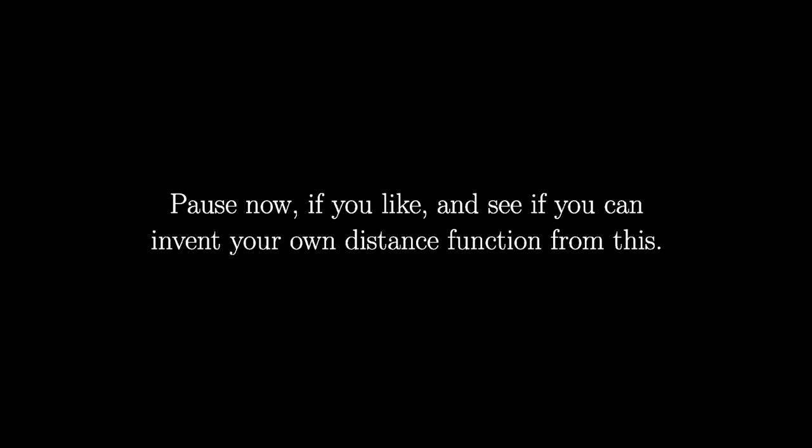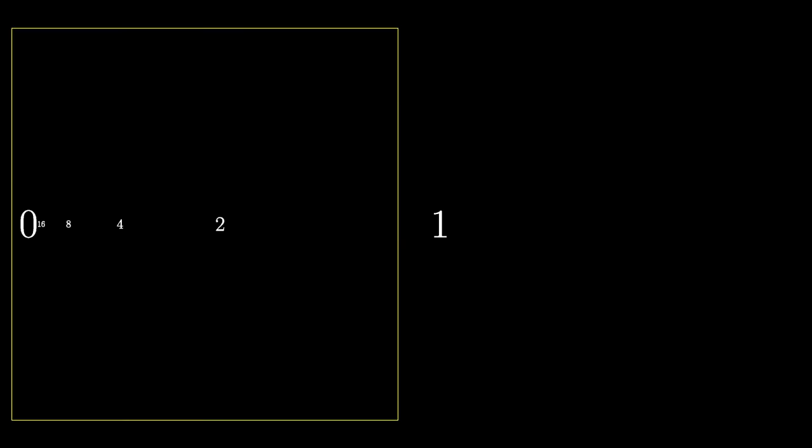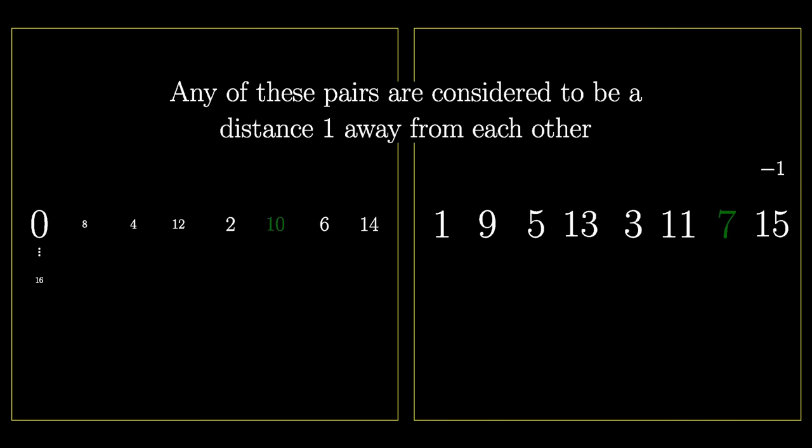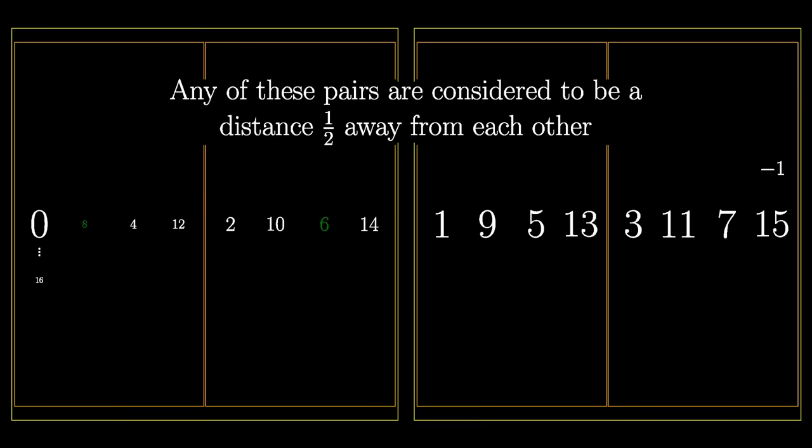So how do you turn this general idea of closeness based on rooms and subrooms into an actual distance function? You can't take this drawing too literally, since it makes one look very close to 14 and zero very far from 13, even though shift invariance should imply that they're the same distance away. Again, in the actual process of discovery, you might toil away, scribbling through many sheets of paper. But if you have the idea that the only thing which should matter in determining the distance between two objects is the size of the smallest room they share, you might come up with the following. Any numbers lying in different large yellow rooms are a distance one from each other. Those which are in the same large room, but not in the same orange subroom, are a distance one half from each other.